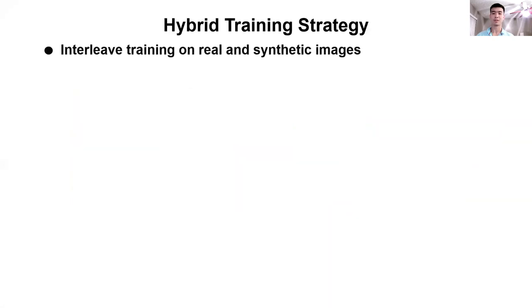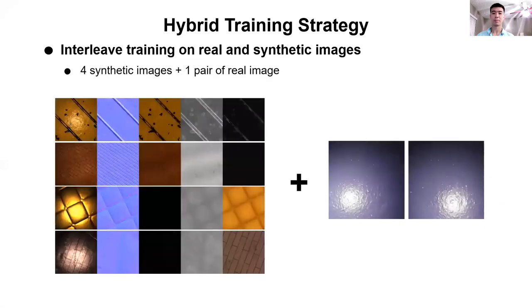We train our network in a hybrid manner by interleaving synthetic and real images during training. More specifically, we use a batch size of 5, where each batch consists of 4 synthetic images and one pair of real images.